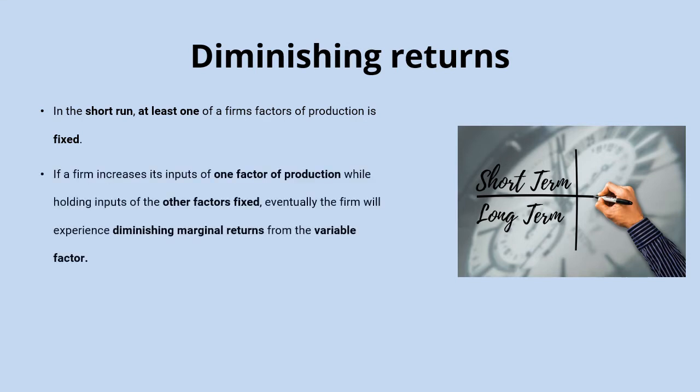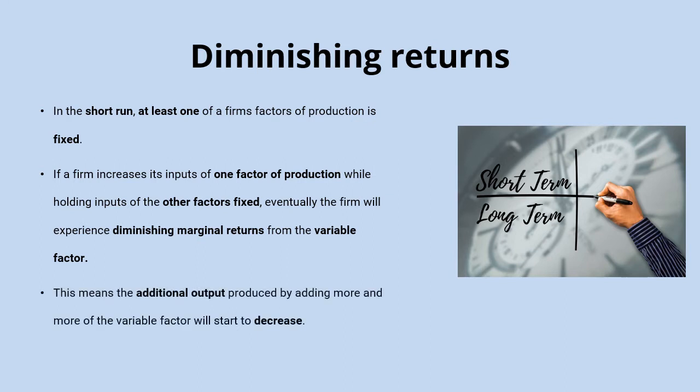The idea with diminishing marginal returns is that if a firm increases its inputs of one factor of production whilst holding other factors of production fixed, then the additional output produced by adding more and more of the variable factor will start to decrease. And that's what we call diminishing marginal returns.